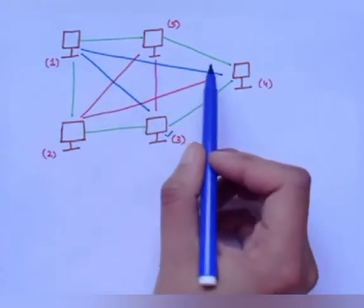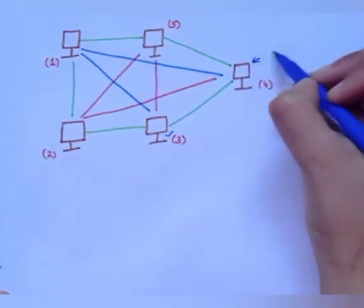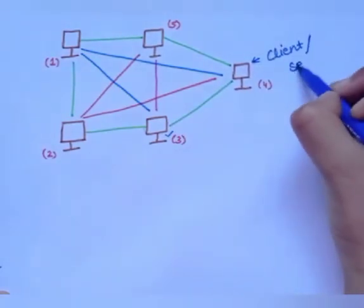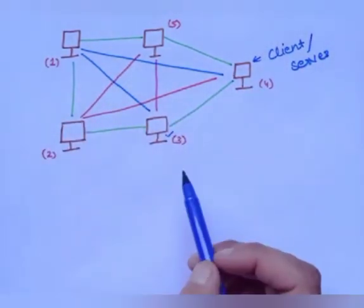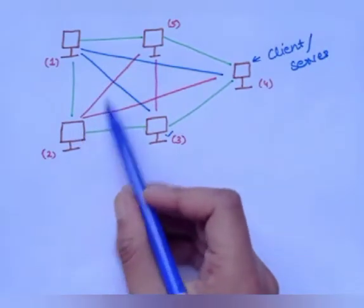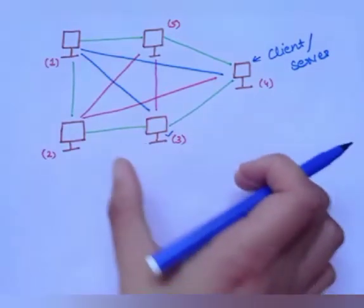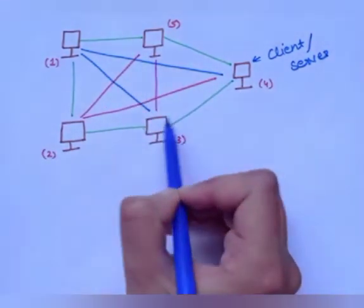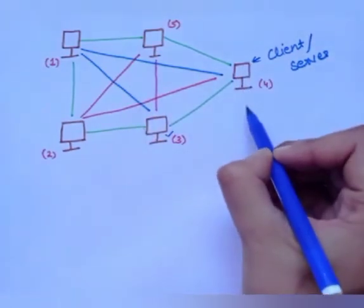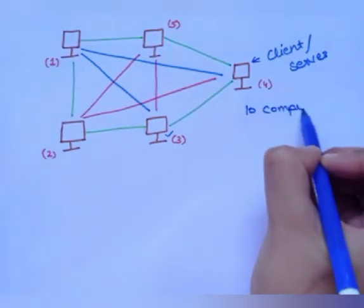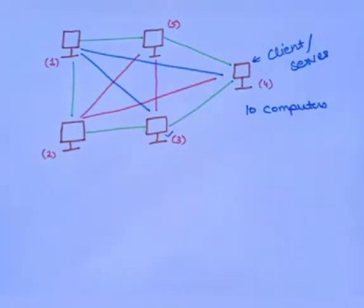In a peer-to-peer network, each computer behaves like both a server and a client by itself — there is no dedicated server or separate client device. Connections are made directly between computer systems. If we connect more computers, this connection becomes very complicated. So we can connect up to 10 computer systems, and only then can we effectively use a peer-to-peer network.